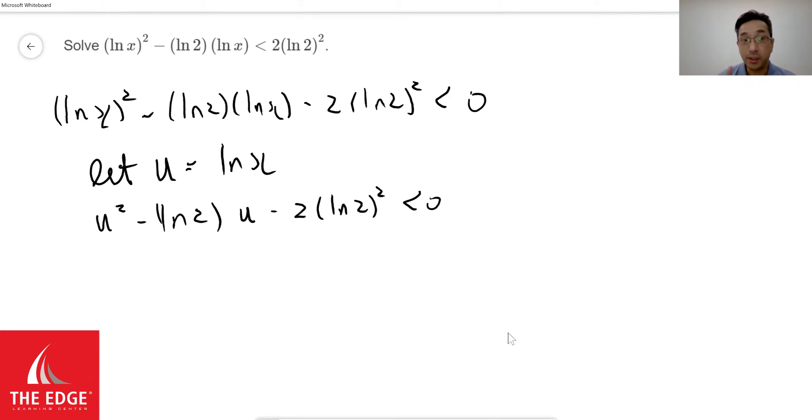Now why is that important? Because what you can see is I can actually factorize them. The first thing I notice is that to factorize the u squared at the very beginning means I have to start with u and u here. Now the second one is a little tricky, but if you pay attention, the fact is that you're dealing with 2 times ln of 2 squared. In the middle, you basically have only one ln of 2 left.